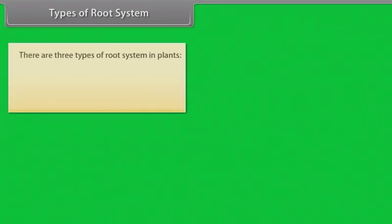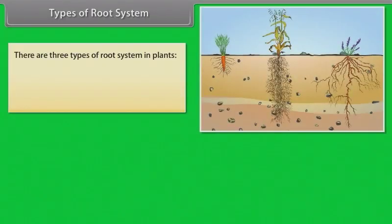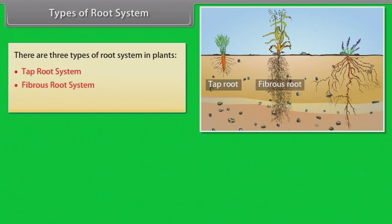There are three types of root systems in plants: tap root system, fibrous root system, and adventitious root system.